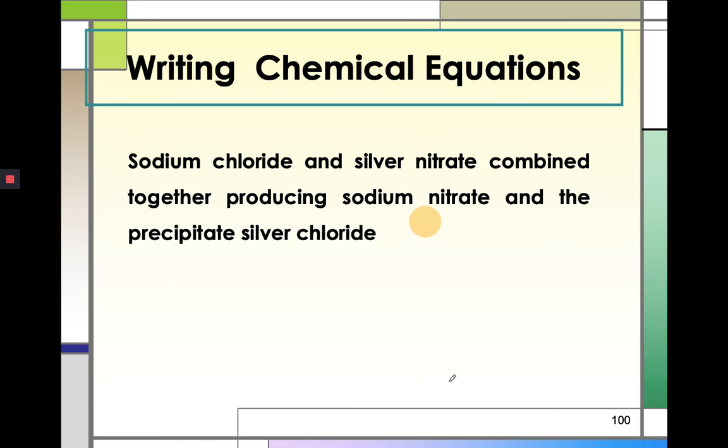Last example would be sodium chloride and silver nitrate combined together, producing sodium nitrate and a precipitate silver chloride. So I'd like you to try this out. You may pause the video and try to see what the answer is. So if you answered NaCl aqueous, AgNO3 aqueous, and then NaNO3 and AgCl, which is your precipitate also, S, then you are correct. So more or less, you must have this following answer.